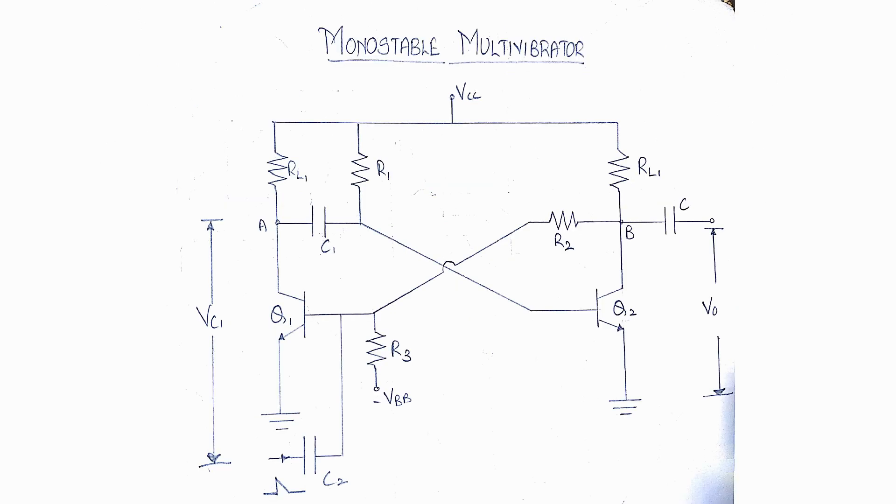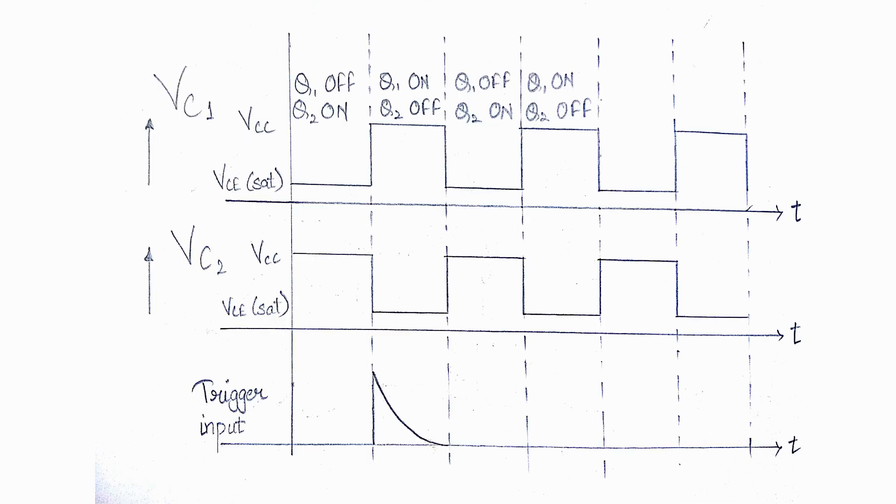Monostable multivibrator. A monostable multivibrator has a stable state and a quasi-stable state. This has a trigger input to one transistor. So one transistor changes its state automatically while the other one needs a trigger input to change its state. As this multivibrator produces a single output for each trigger pulse, this is known as a one-shot multivibrator. This multivibrator cannot stay in quasi-stable state for a longer period while it stays in stable state until the trigger pulse is received.